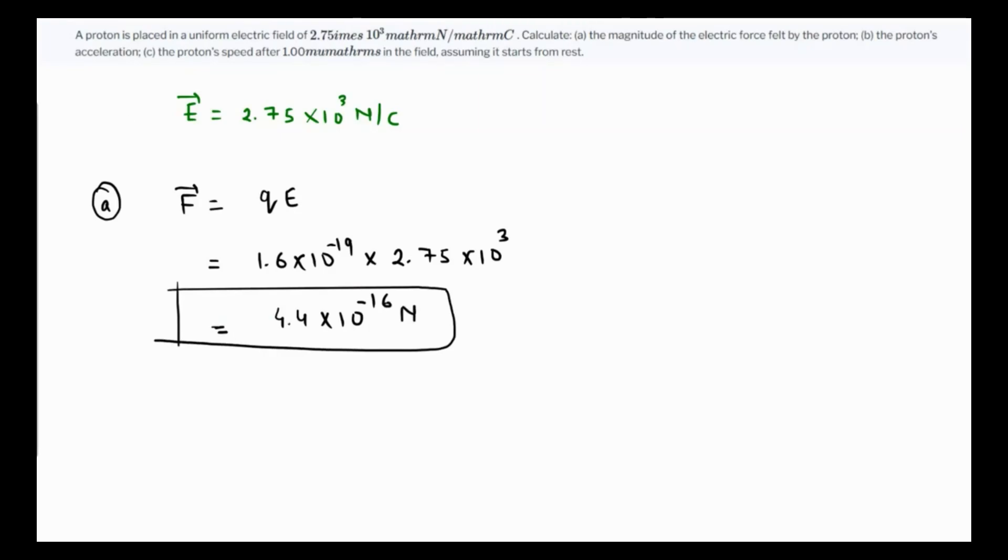Part B is we have to find the proton's acceleration, so acceleration is force over mass. The acceleration will be force over mass, and the mass of the proton is...